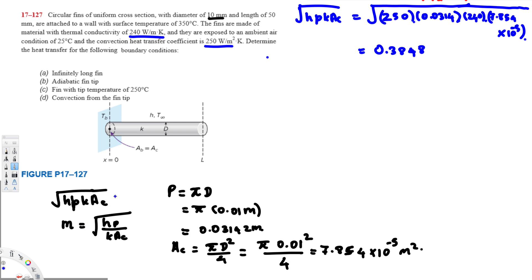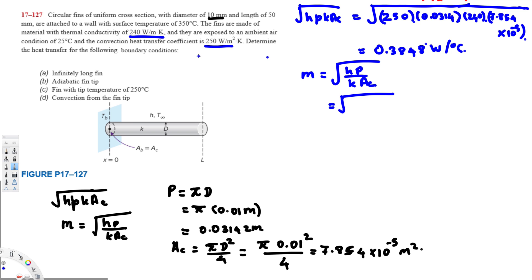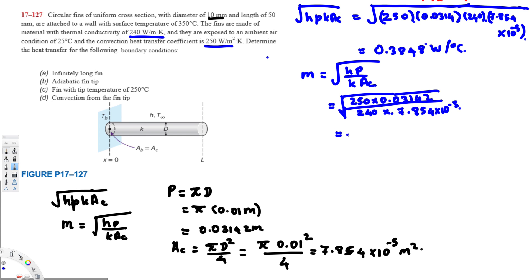Next, we calculate the m value using m = √(hp / kAc). With h = 250, perimeter = 0.03142, k = 240, and Ac = 7.854 × 10⁻⁵, this gives m = 20.41 m⁻¹. Now we have both √(hpkAc) and m, so we can solve each case.